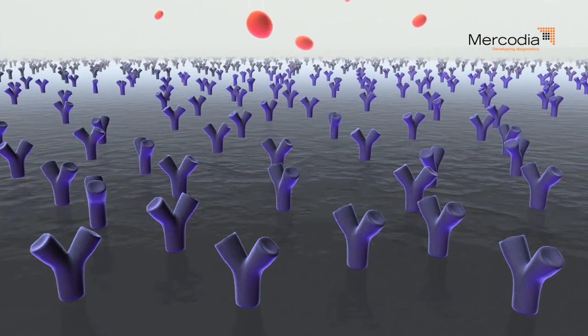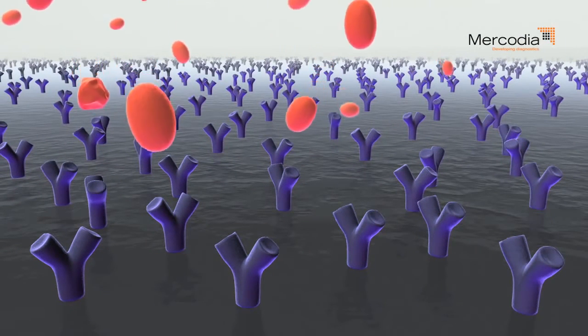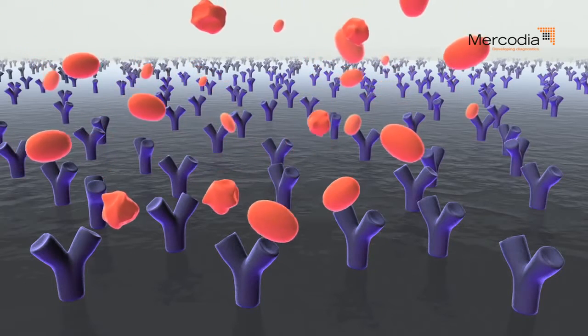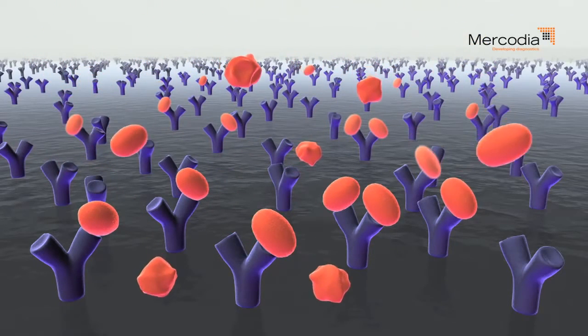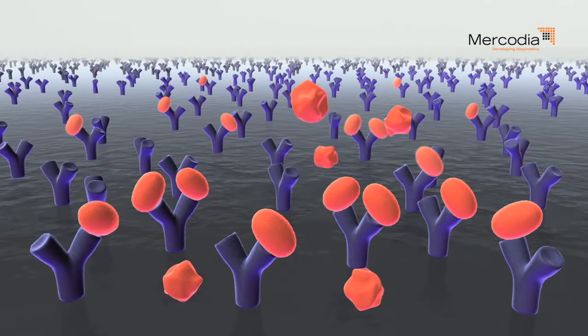In a sequential assay, sample is applied to an antibody-coated microtiter plate well. The capture antibody binds to the antigen in the sample.